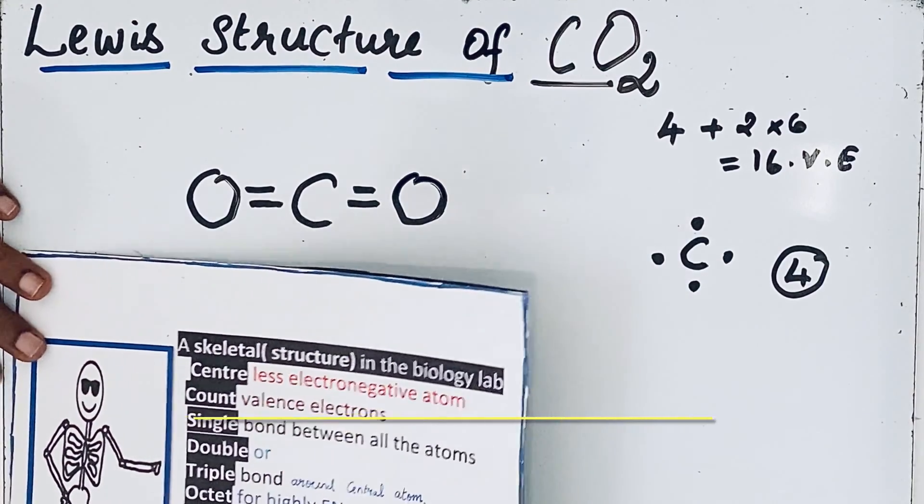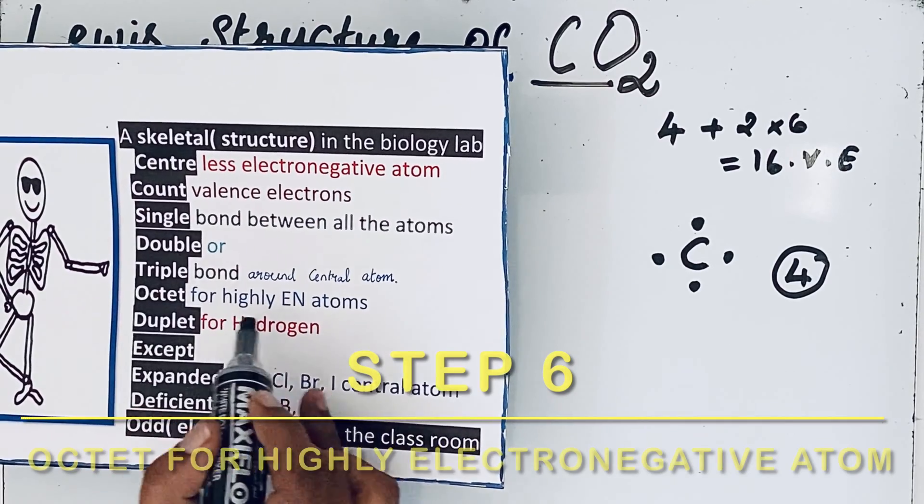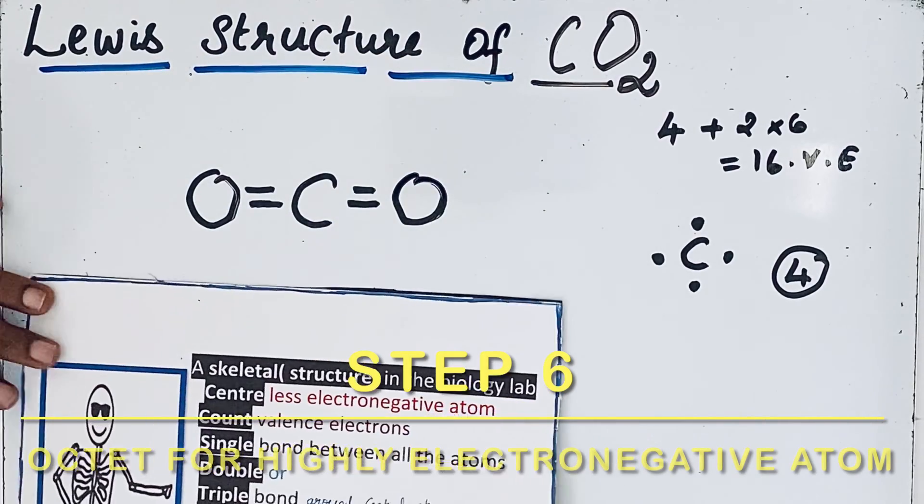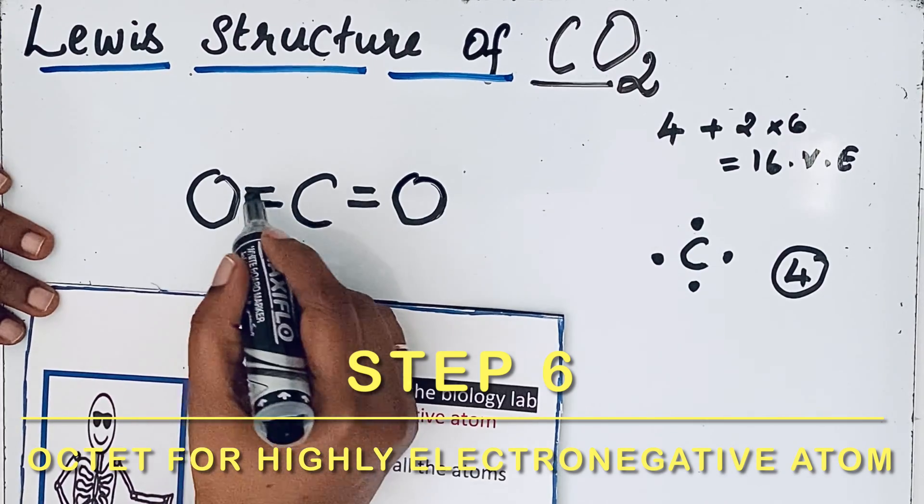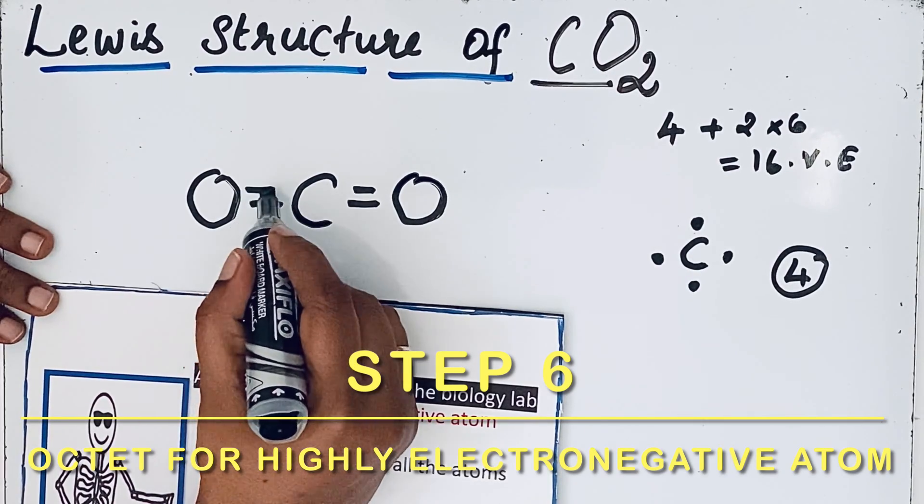Now come to that next step: octet for highly electronegative atom. Oxygen is highly electronegative, so you should get that octet. So here, already two bonds are there: two, four, then six, eight.